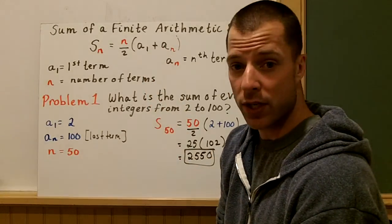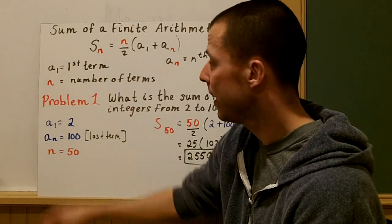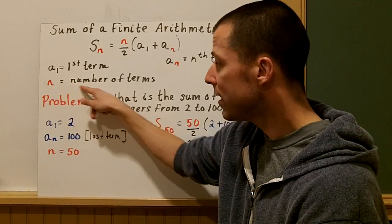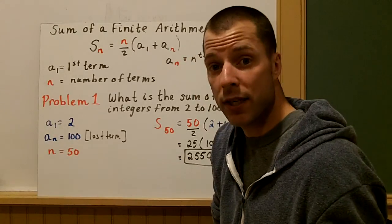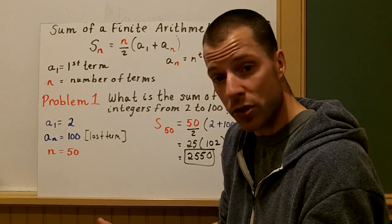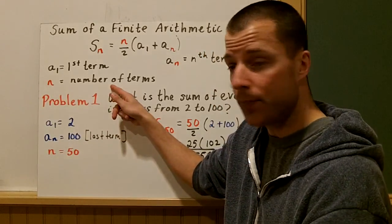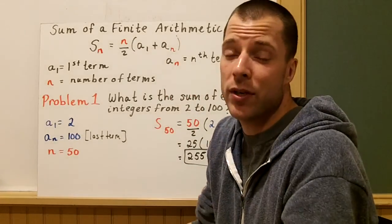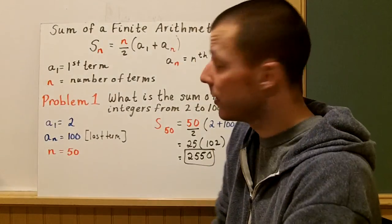Let's look at what each of these terms mean. S_n is the sum. a_1 is still your first term. n is the number of terms. When you look at your finite series, you got to say how many terms are from start to end. Count up those terms and that's your n value. a_n is the nth term. Most of the time it's going to be your last term of your series.